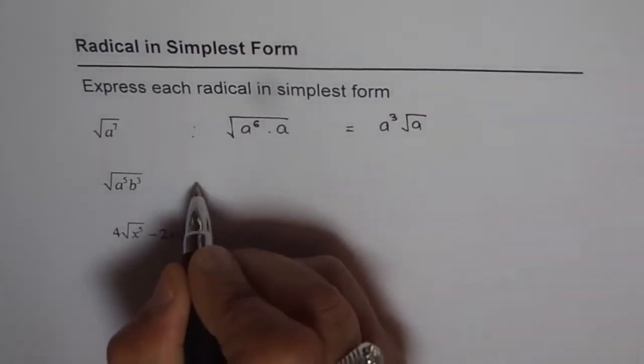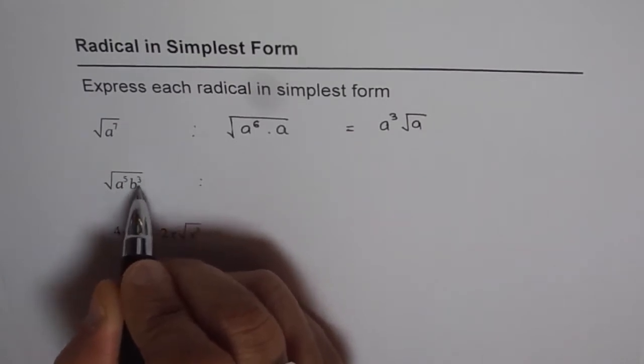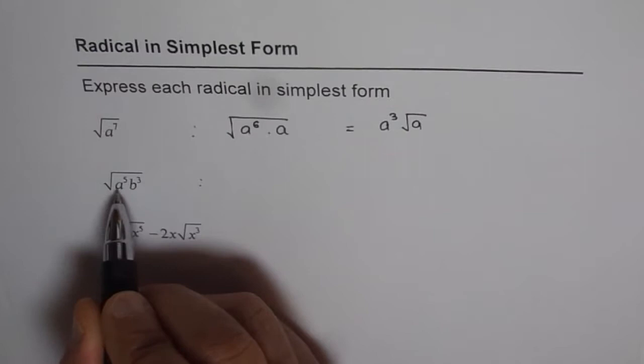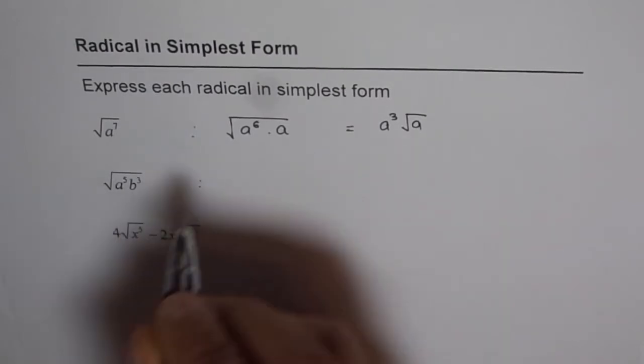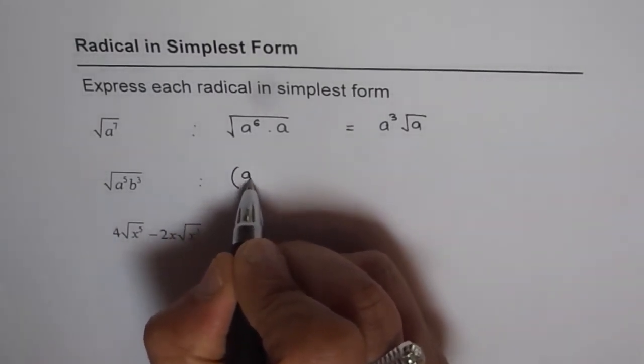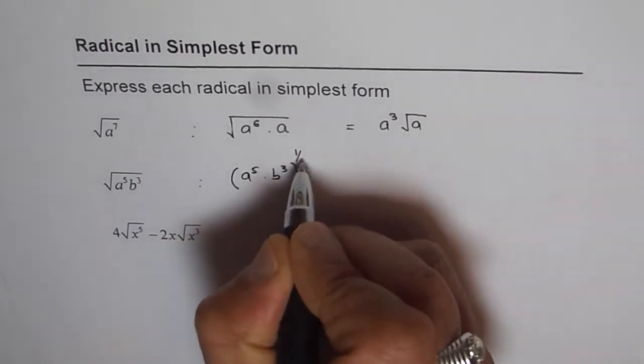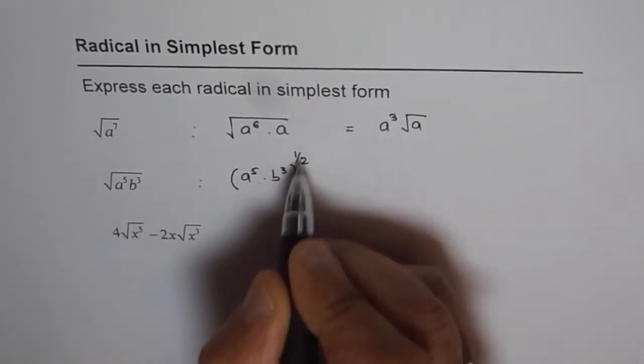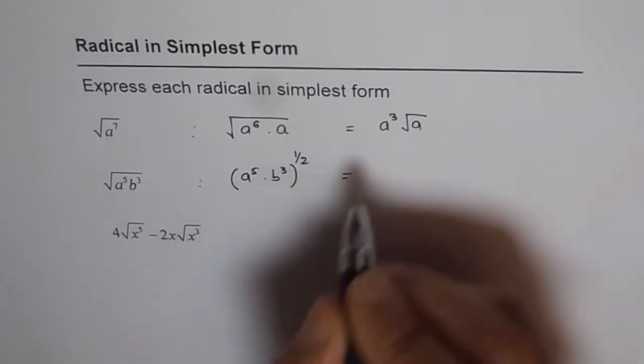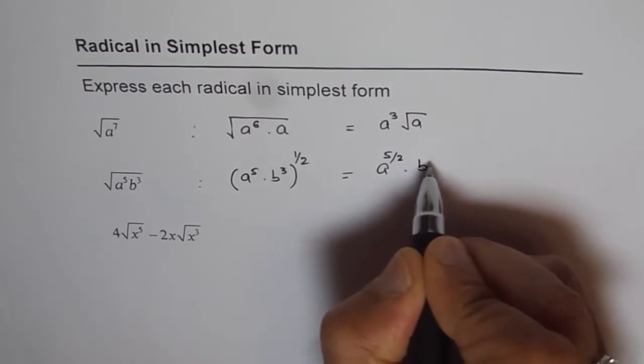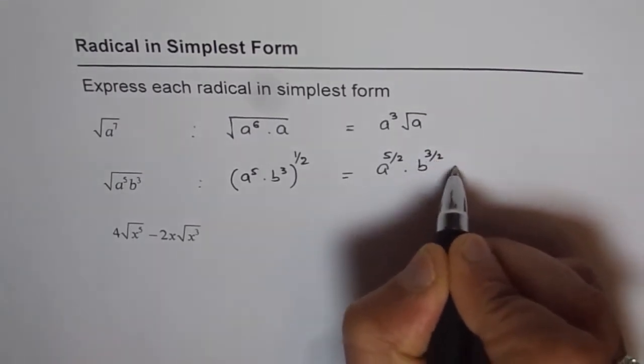The next one: a to the power of 5 b cube. We could do half of both. When we do half of both, we get 5 divided by 2 and 3 divided by 2. I am adopting different methods this time. I will write this as a to the power of 5 times b to the power of 3 to the power of half. Square root really means to the power of half. If I apply laws of exponents, I get a to the power of 5 over 2 times b to the power of 3 over 2.